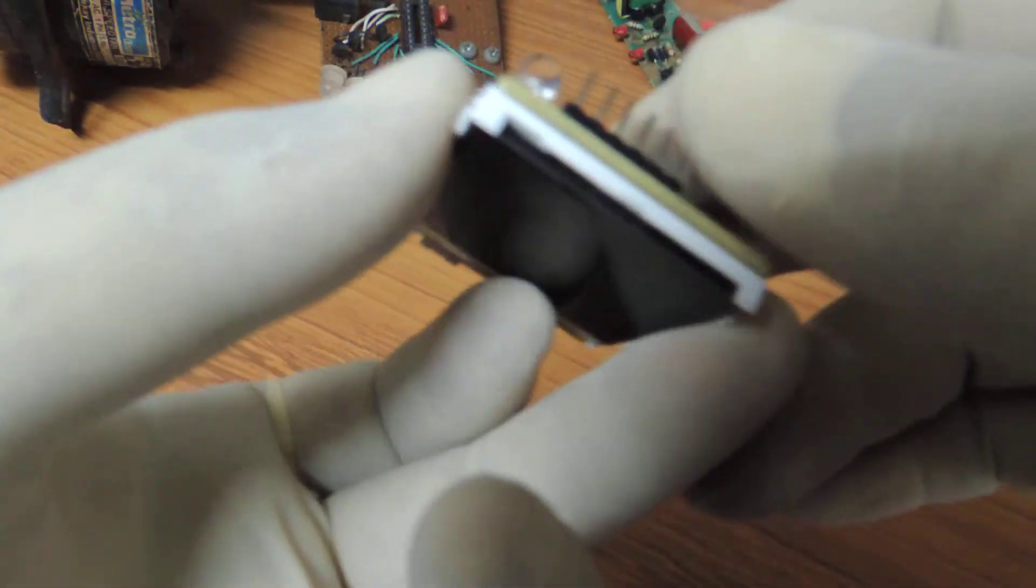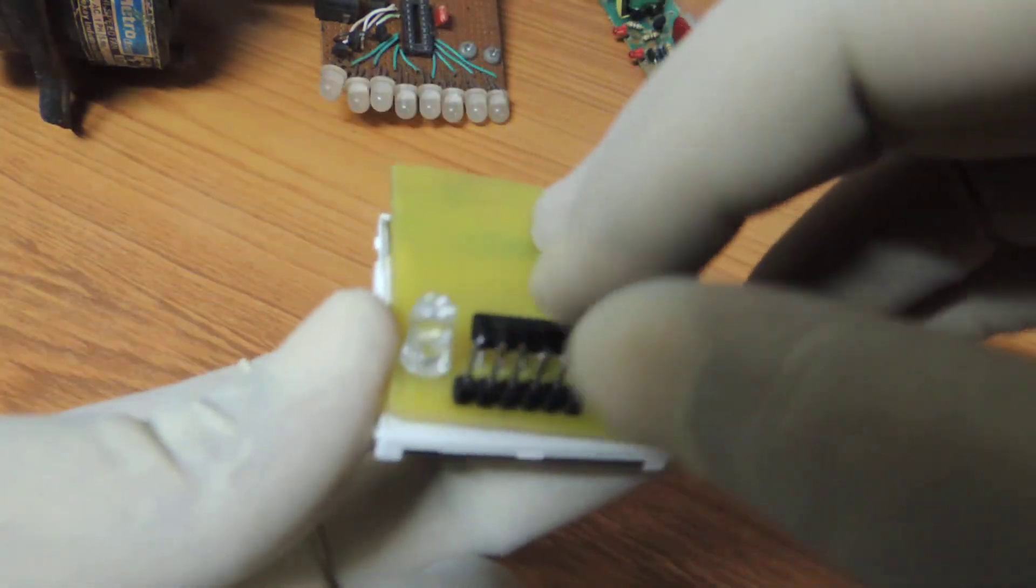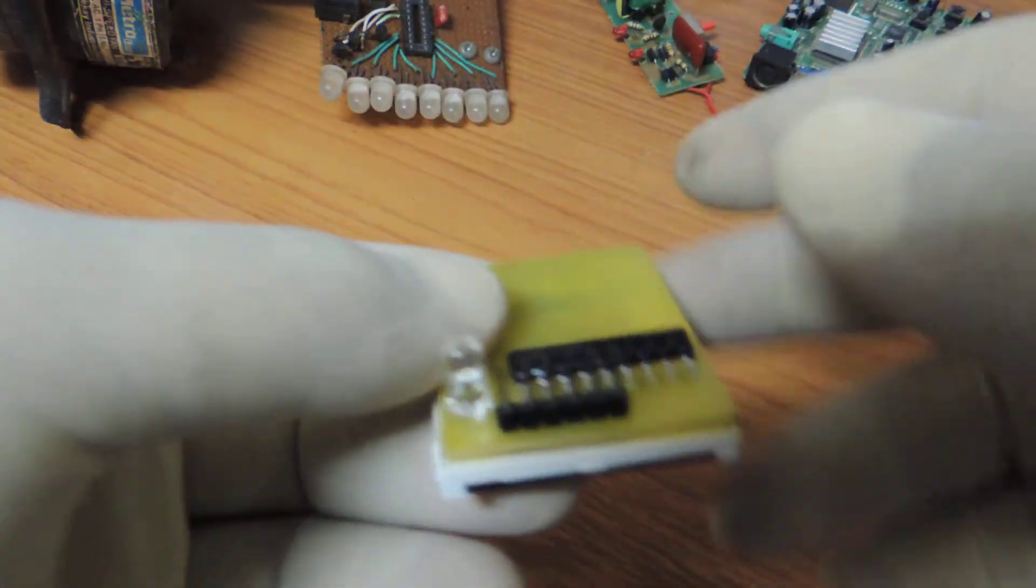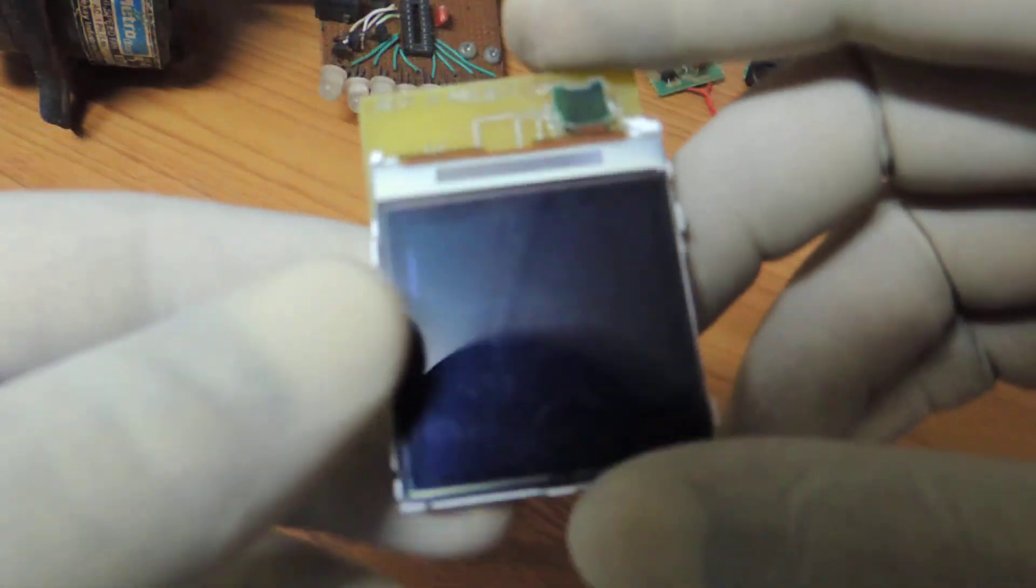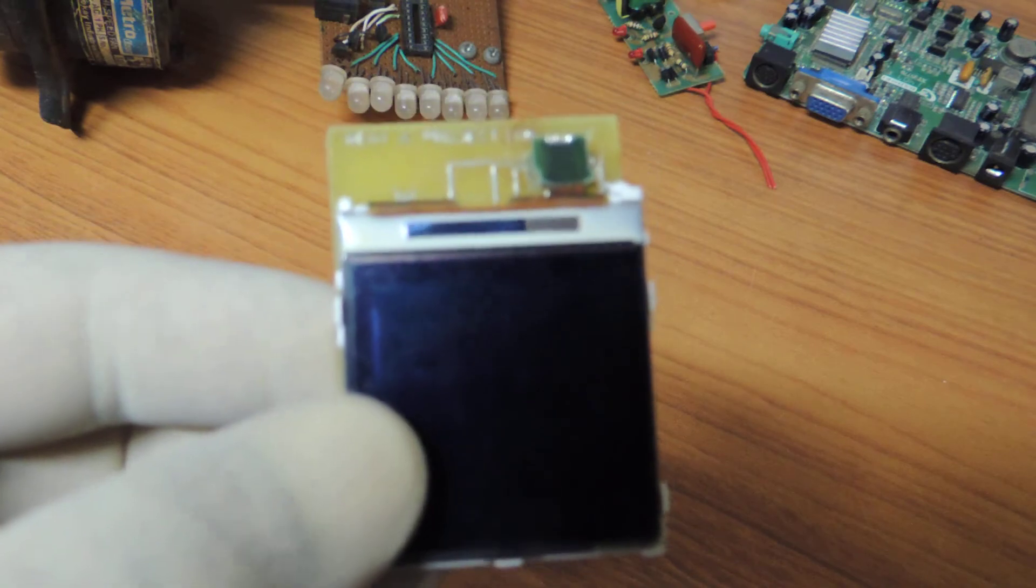And yes, these are the pin headers. You'll have to go through the data sheet to understand which one is for clock, which one is for ground, which one is for data, and so on. So thanks a lot for watching this video. Have a great day, God bless.